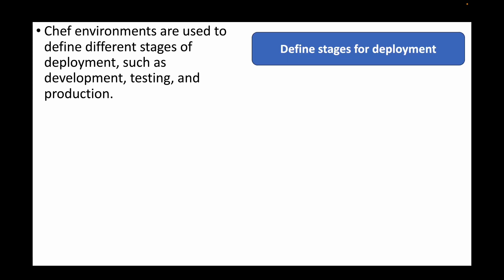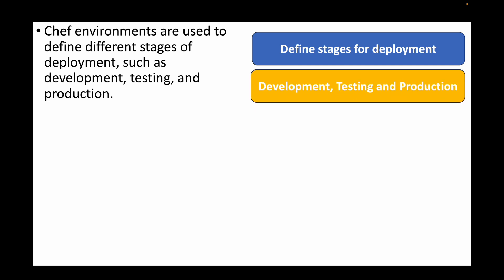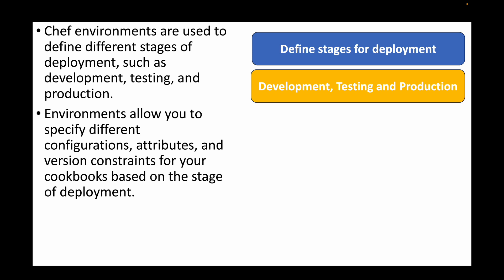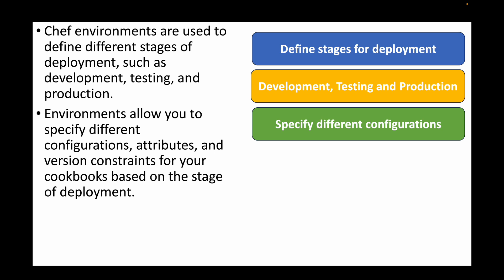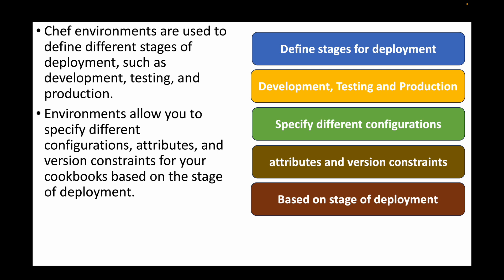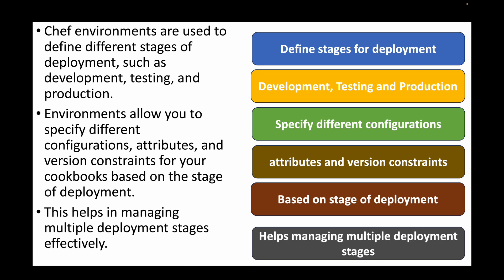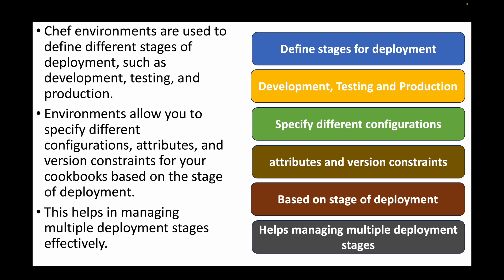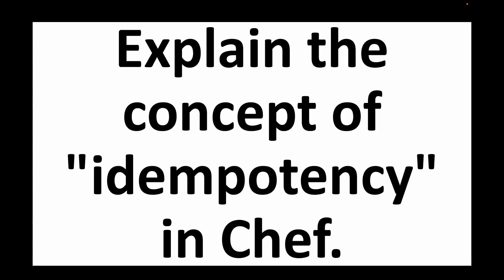The next question is: what is a Chef environment? Chef environments are used to define different stages of deployment — development, testing, and production. These environments allow you to specify different configurations, attributes, and version constraints for your cookbooks based on the deployment stage. If deploying to development, testing, or production, you can have the necessary configurations for each, helping to manage multiple deployment stages effectively.